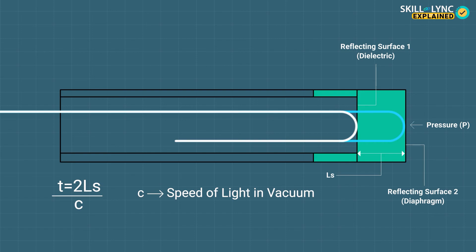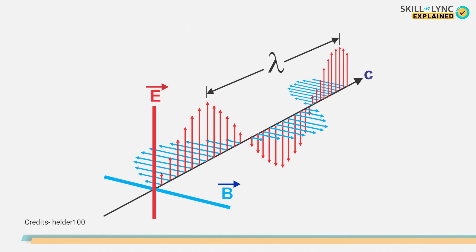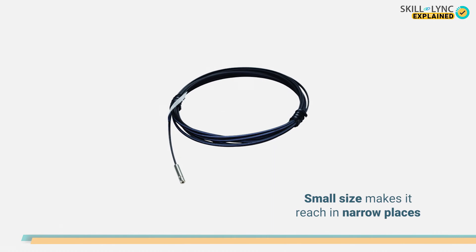Now that we've seen the construction and working, let's discuss the advantages of the fiber optic pressure sensor. One of the main advantages is that they are immune to electromagnetic waves, and because of this, the reflected signal gives accurate measurements.